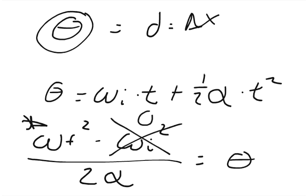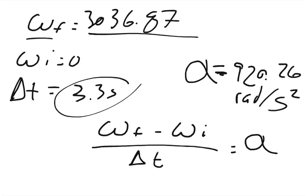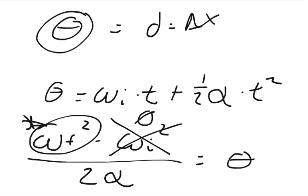this quantity is going to be zero, and this quantity we said is 3036.87. So 3036.87 squared,